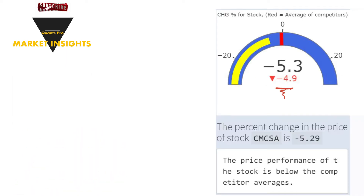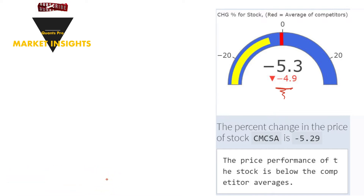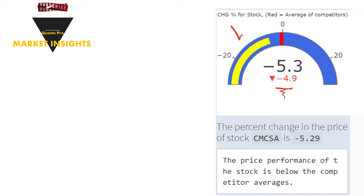First, let's talk about the price change compared to the previous close. In the gauge chart, the price change of the stock on the last trading day is compared with its competitors in the graph showing the price performance for the stock. Considering its competitors in the market, the yellow color shows the daily percentage change in the share price, while the red color gives the average of the percentage price changes in the competitors' shares.